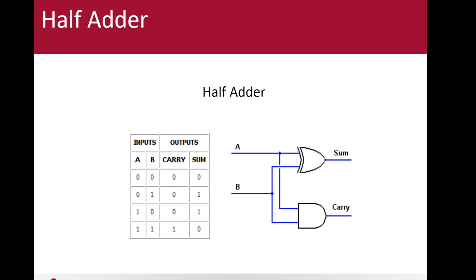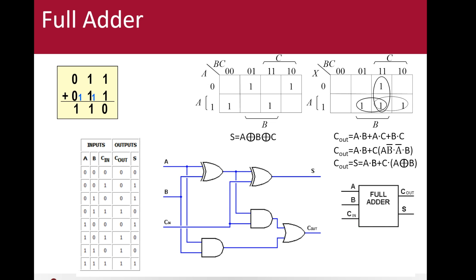Here we're seeing the half adder, where we have two inputs and two outputs. The difference between a half adder and a full adder is that the full adder has three inputs — A, B, and the carry-in — and two outputs, the sum and the carry-out. We can see the internal structure of the full adder, and it's composed of two half adders. The first half adder adds up A and B, while the second one computes the result of the addition plus the carry-in.